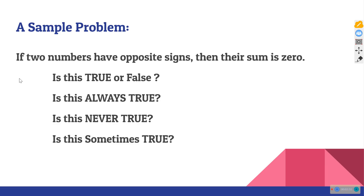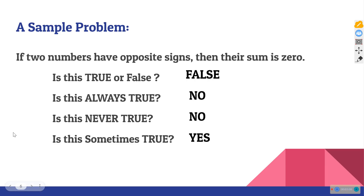Think about this: is this statement true or false? Is it always true? Is it never true? Is it sometimes true? This statement is false — it is not always true. But it's also not never true, because sometimes it is true. We have to tell the difference between these ideas. Just because this statement is false doesn't mean it's never true. This statement is claiming that just because two numbers have opposite signs — one positive and one negative — they have to add up to zero.